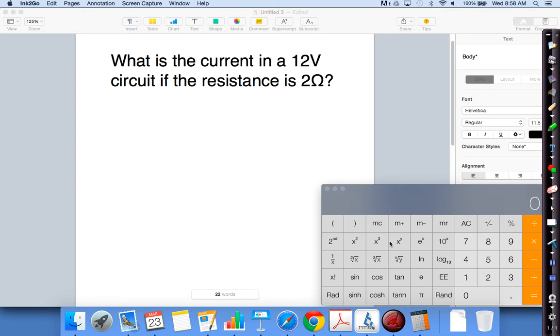So starting off, let's go ahead and take a look at the question here. What is the current in a 12 volt circuit if the resistance is 2 ohms? Alright, so they want to know the current, which is in amps, and they gave us voltage and resistance.